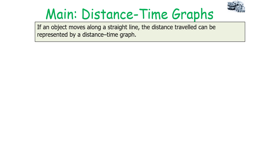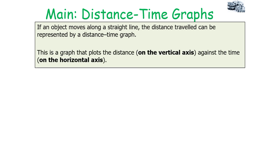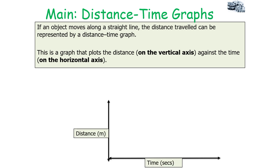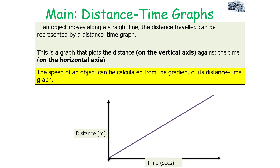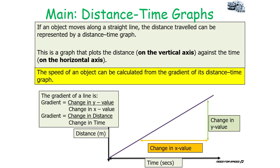If an object moves along a straight line, the distance travelled can be represented by a distance-time graph — a graph that plots distance on the vertical axis and time on the horizontal axis. The speed of an object can be calculated from the gradient of a distance-time graph, because the gradient is the change in y over the change in x — in this case, distance divided by time, which gives us speed.